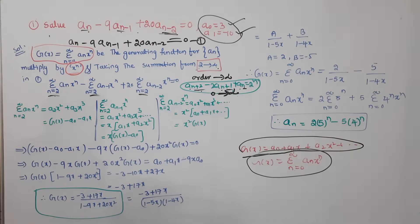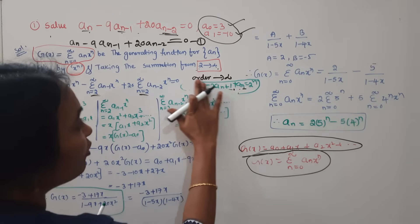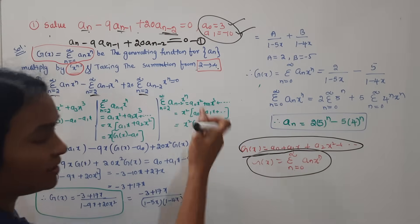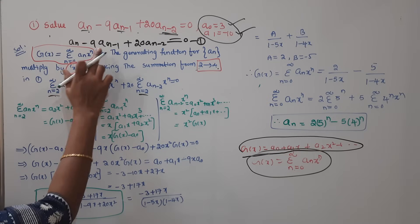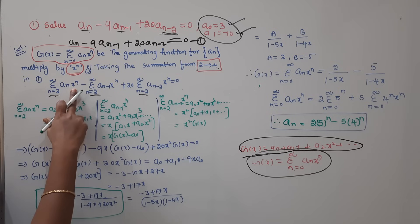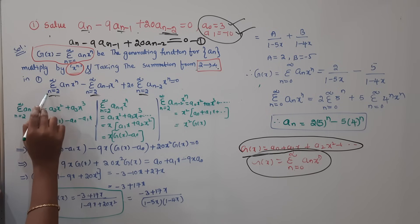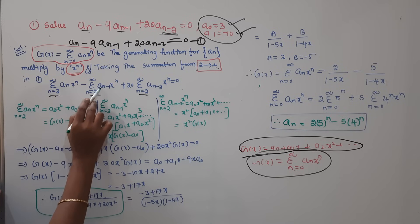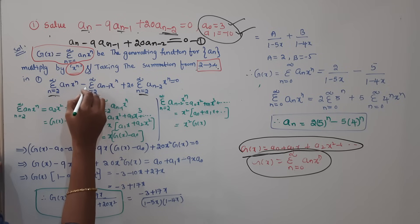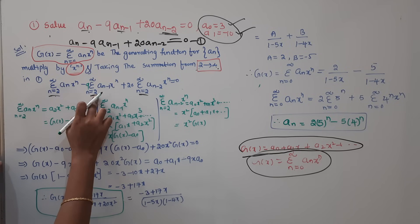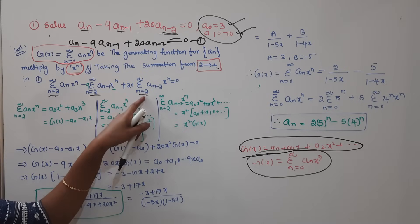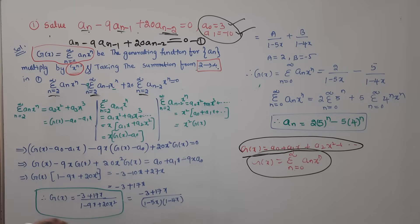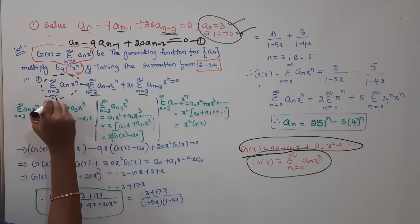Is it clear? This is the main point. If you forget this, there will be a problem. Now, for every term multiplied by x to the power n: the summation from n equals 2 to infinite of aₙ xⁿ, minus 9 times the summation from n equals 2 to infinite of aₙ₋₁ xⁿ, plus 20 times the summation from n equals 2 to infinite of aₙ₋₂ xⁿ. You will simplify this part — do this rough work in green color.